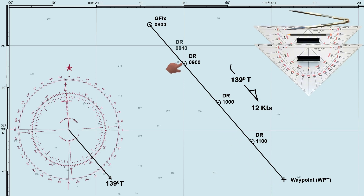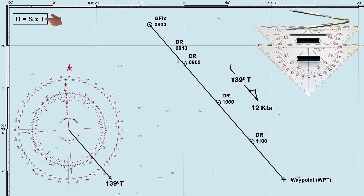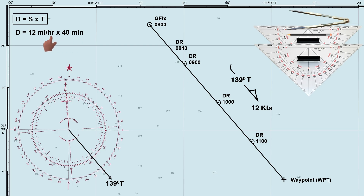So how do we find the ship's DR position at 0840 hours? First, we need to calculate the distance traveled by the ship in 40 minutes at a speed of 12 knots. We'll use the formula: distance equals speed times time. The ship's speed is 12 knots, or 12 miles per hour, multiplied by the steaming time of 40 minutes. Since the steaming time is in minutes and the speed is in miles per hour, we divide by 60 to convert minutes into hours. The ship has traveled 8 nautical miles in 40 minutes at a speed of 12 knots.